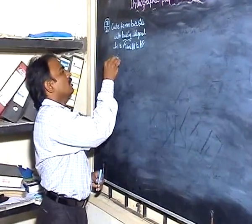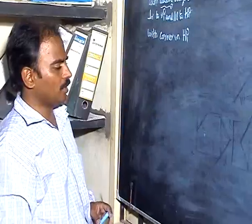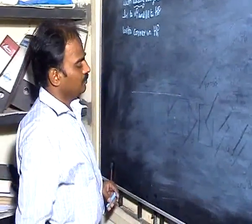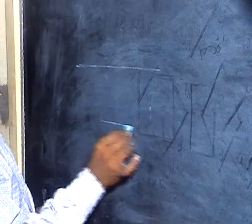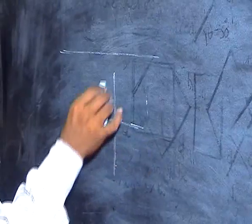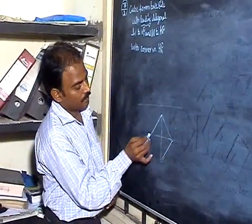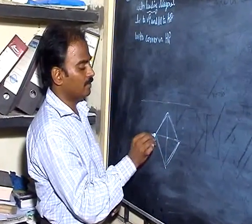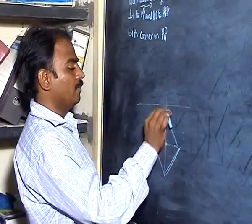The cube is placed with one corner on HP. So we start with the top view — draw the top view first. Draw the cube, which appears as a square in plane projection. First take the square in corner position, such that the line joining the corner and the center of the plane is kept parallel to the xy line.